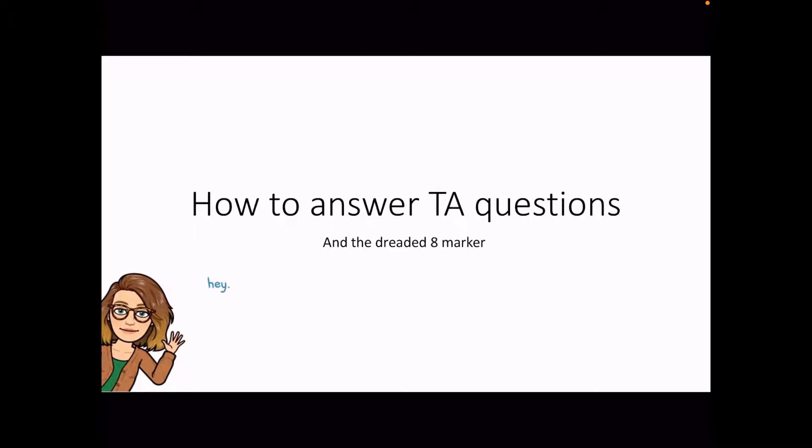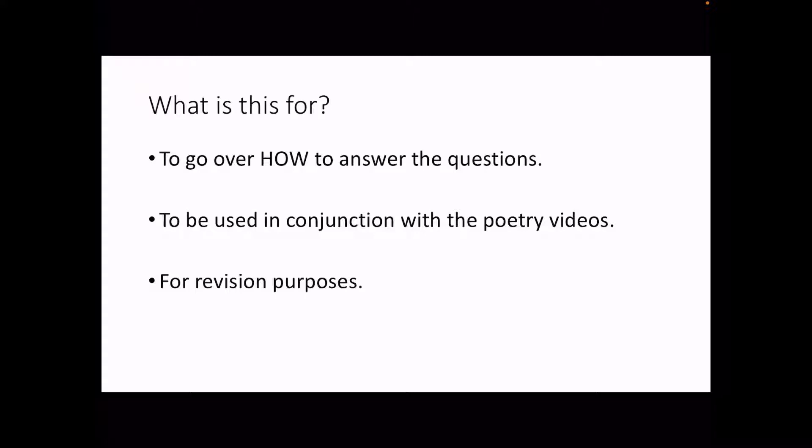Hello everybody, welcome to the first video I've done in a while. Apologies for that — doing videos during lockdown was a lot easier than doing videos while working in a classroom full-time. The sound quality may be off as the wind is up and we're heading into another little storm, but bear with me. This is a video about how to answer TA questions for National 5 in the Scottish curriculum, and in particular how to answer the 8 marker. I'm Miss AB — let's get started.